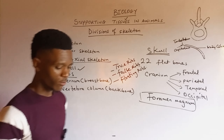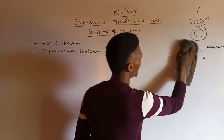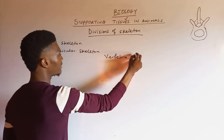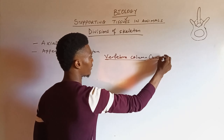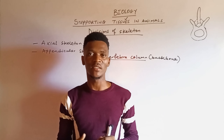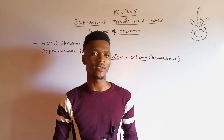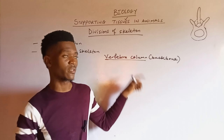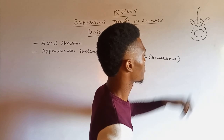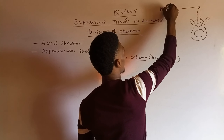Now let's look at the vertebral column in detail. The vertebral column is also called the backbone. Never mistake the vertebral column for the spinal cord — it is the vertebral column that protects the spinal cord as it runs from the head region into the back region.